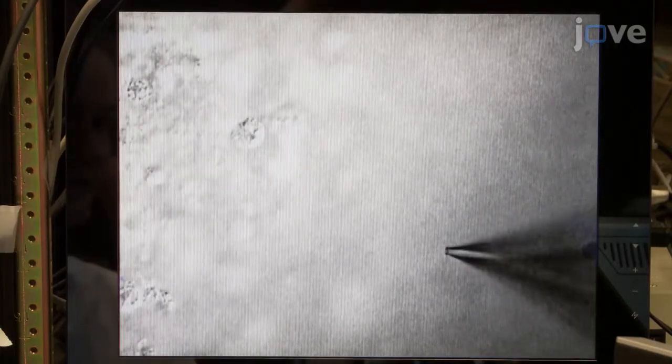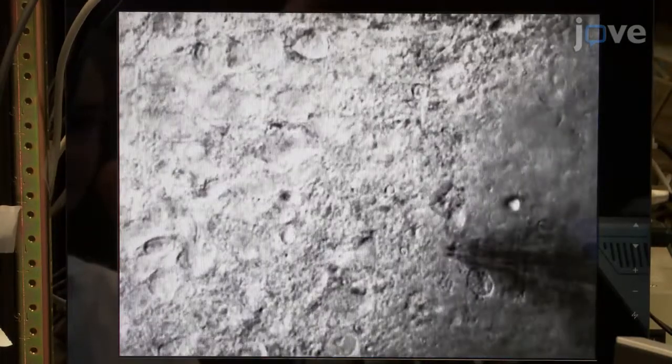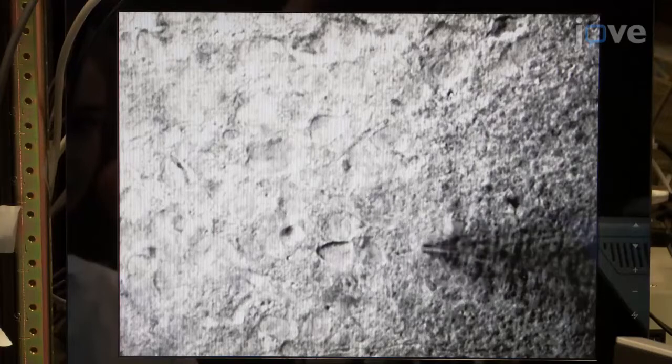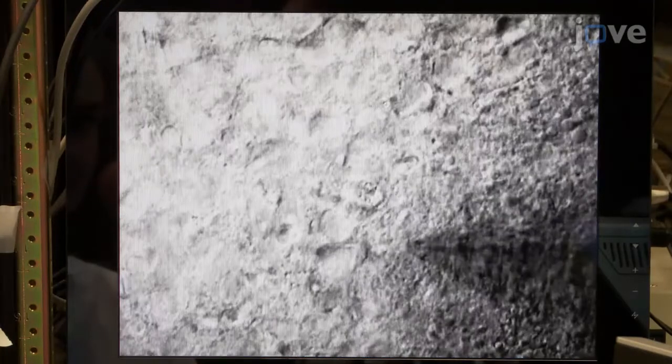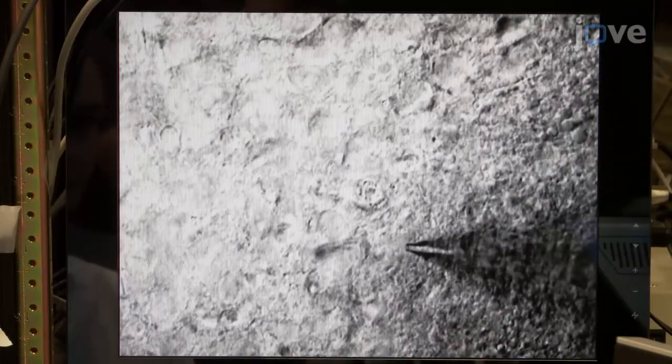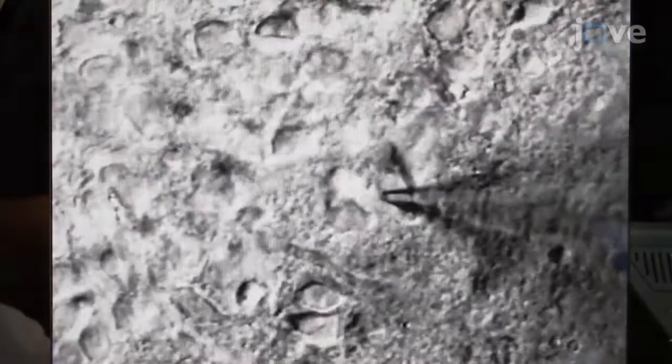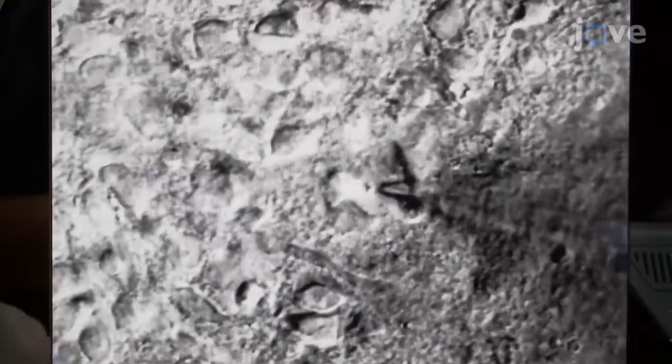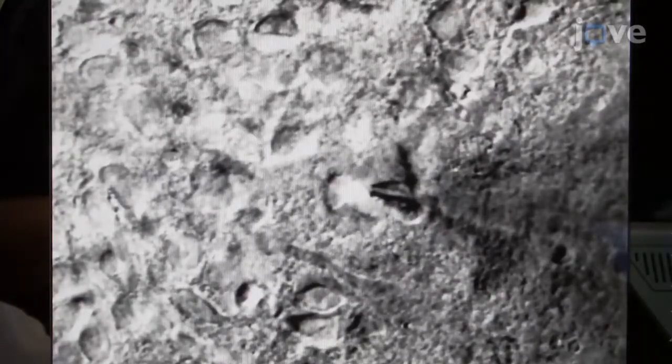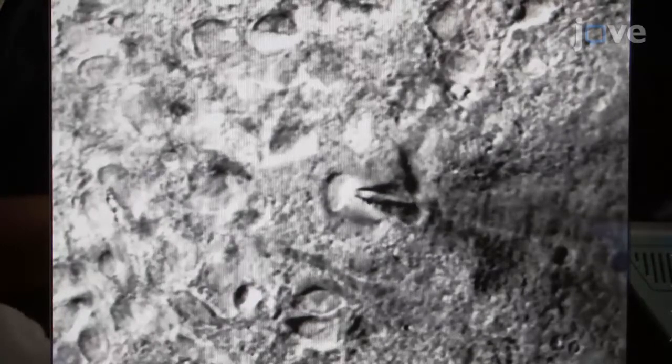Next, select a healthy cell with an intact membrane and approach the tissue with the pipette. The positive pressure should cause a slight disturbance on the tissue. Slowly bring the pipette closer to the cell in a diagonal motion until a small dimple is formed on the cell surface.